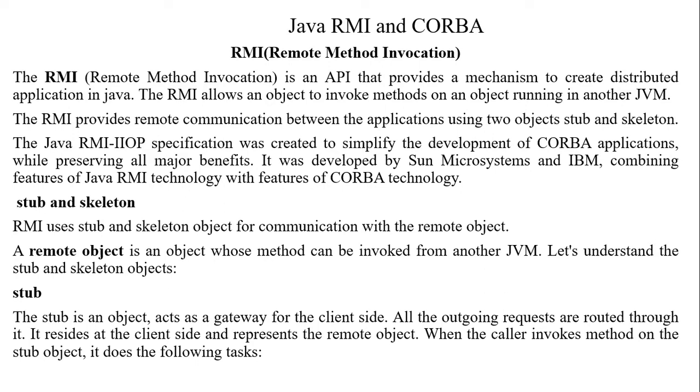A remote object is an object whose methods can be invoked from another JVM. Let's understand the stub and skeleton objects.